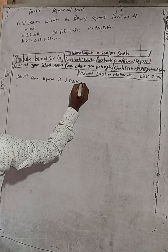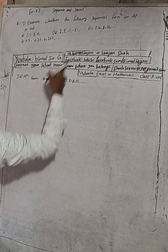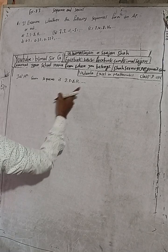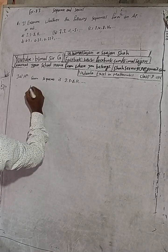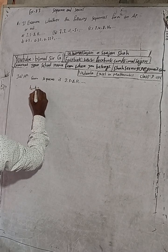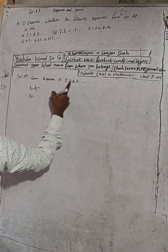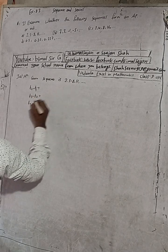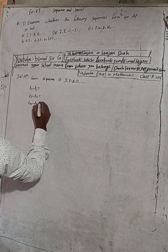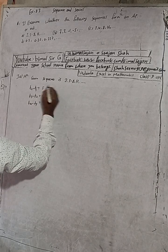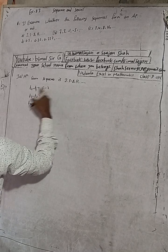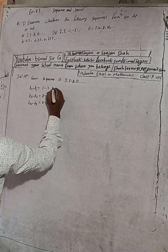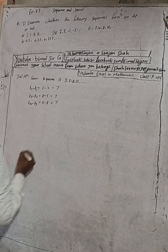To find whether this sequence is an AP or not, we have to find the difference between consecutive terms. That means T2 minus T1, T3 minus T2, and T4 minus T3. So T2 minus T1 is 5 minus 2, T3 minus T2 is 8 minus 5, and 11 minus 8. The differences are 3, 3, 3.